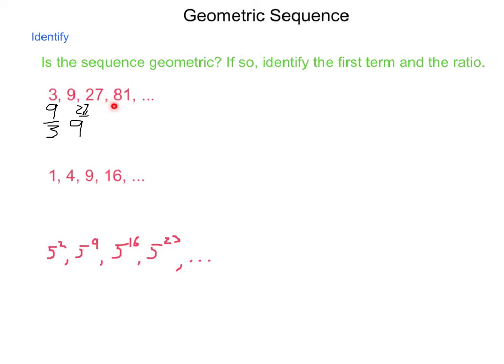Then again with our next, 81 divided by 27. And if these are always equal, then we have a constant ratio. 9 divided by 3 is 3, 27 divided by 9 is 3, and 81 divided by 27 is 3.